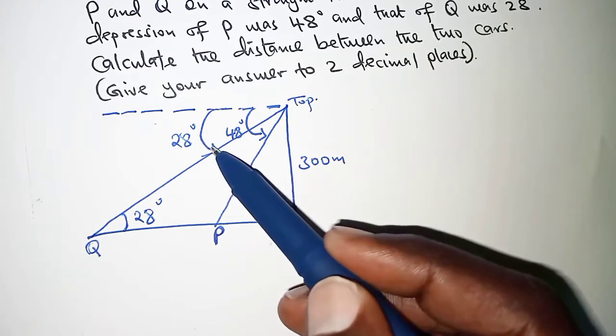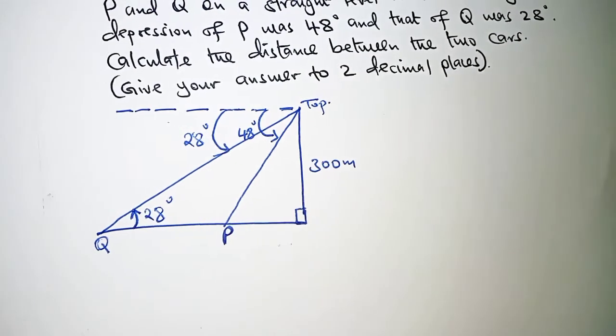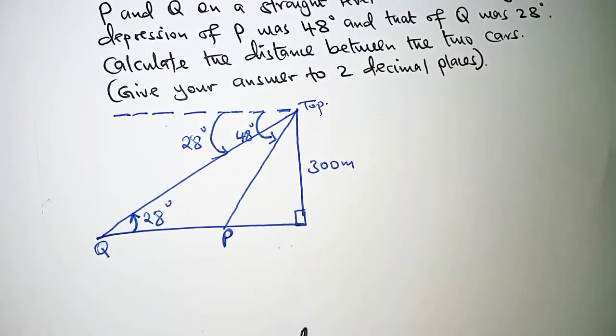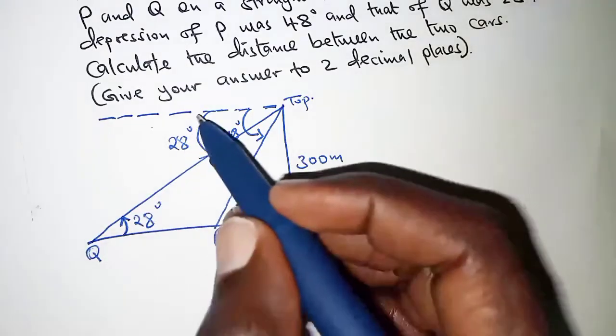So, if this is the angle of depression, then this one here is the angle of elevation which is the same as the angle of depression. And for this particular case, these are alternate angles.